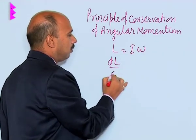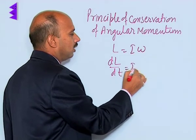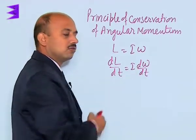So, we can write here dL upon dt is equal to I into d omega upon dt, differentiating with respect to time.